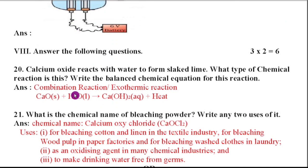Next, eighth main, answer the following questions 3 into 2, 6 marks. Twentieth question, calcium oxide reacts with water to form slaked lime. What type of chemical reaction is this? Write the balanced chemical equation for this reaction.